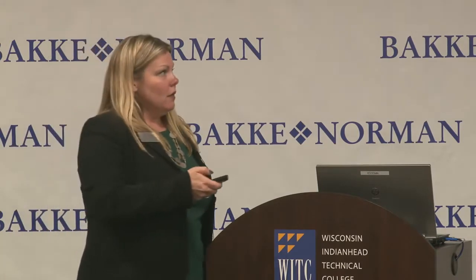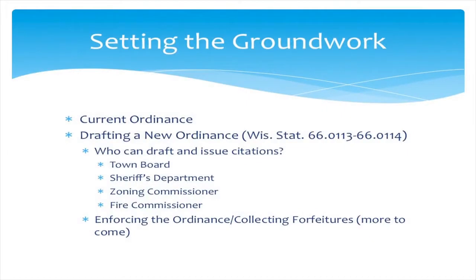To use the county circuit court, you need what's called a citation ordinance — an ordinance that gives you the ability to write and issue citations. That authority is available to you under Wisconsin Statute 66.0113. That's the statute under which you have the authority to issue citations, so you need to draft that ordinance first.